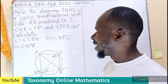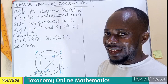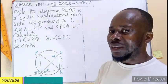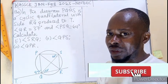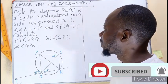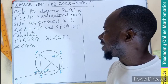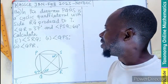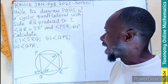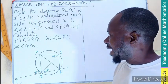Hello, welcome. Let's solve question 13a from NOVDEC 2025, January-February edition. In the diagram, PQRS is a cyclic quadrilateral with side PQ, RQ produced to T.